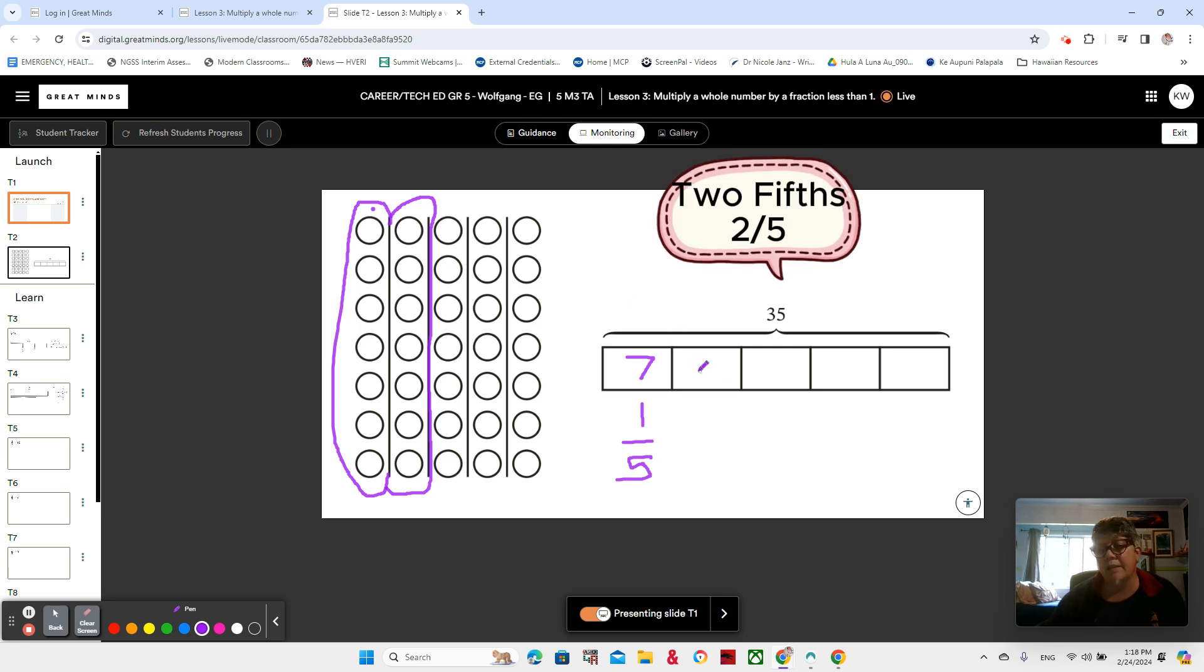Five groups, and in our tape diagram we're going to be looking at two of the parts when it's broken into five parts. So you can see that two-fifths is going to be 14.